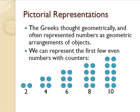I'd like to look at these numbers the way the Greeks did. The Greeks thought about numbers geometrically and often represented numbers as geometric arrangements of objects. And so for the even numbers, we've got 2, 4, 6, 8, and 10 represented here by circles. They could be counters or pebbles or something. But the thing I want you to notice is that the even numbers are represented by two columns that have the same number of things. So we could think of these as rectangles that are even across the top there.